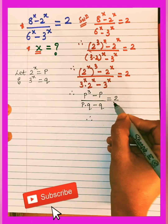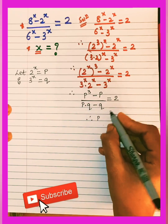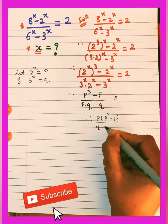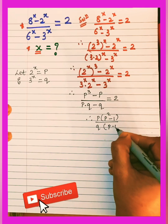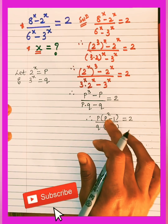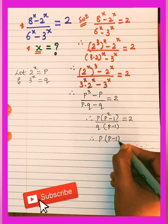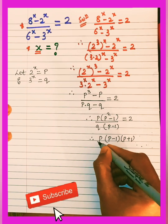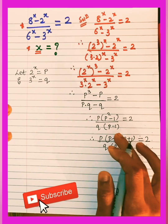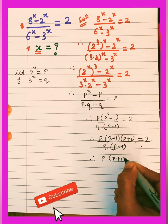From this equation we can take p common from the numerator, leaving (p² − 1), and q common from the denominator, leaving (p − 1). So we get p(p² − 1) / q(p − 1) = 2. Now p² − 1 factors using the difference of squares identity as (p − 1)(p + 1). So we have p(p − 1)(p + 1) / q(p − 1) = 2, and (p − 1) cancels.